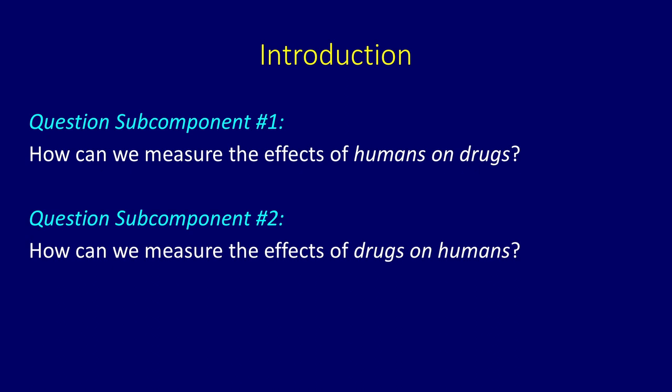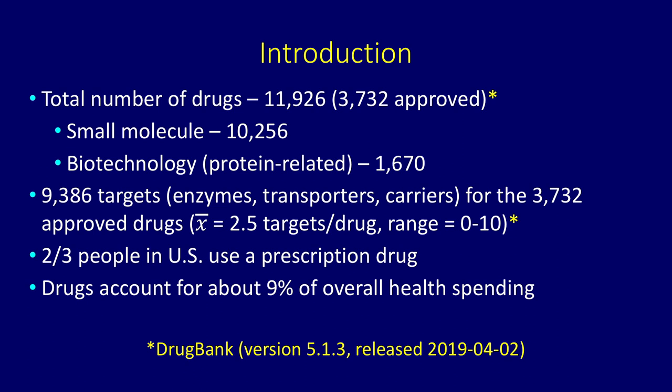To illustrate the importance of measuring the effect of drugs, consider how common drugs are. There are nearly 12,000 drugs, about a third of which have been approved. Most of those drugs are small molecule drugs like acetaminophen or ibuprofen — about 10,000. There are almost 1,700 biotechnology- or protein-related drugs, and there are over 9,000 targets for those drugs, averaging two and a half drug targets per drug, ranging up to as many as 10.